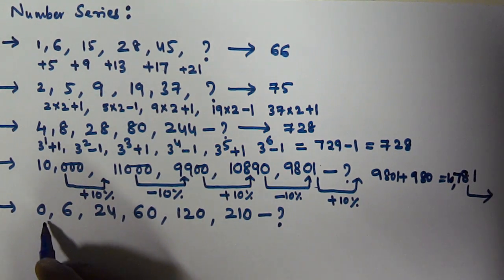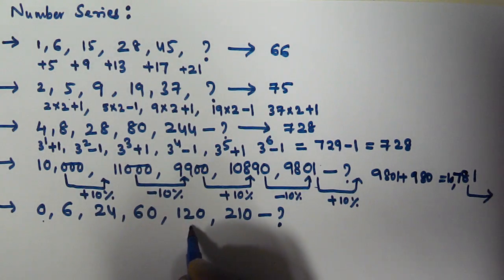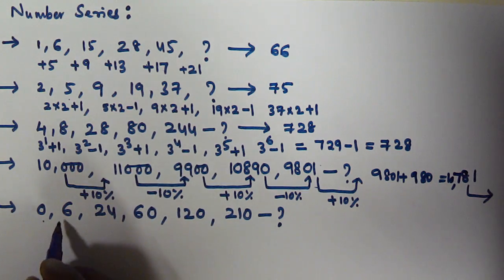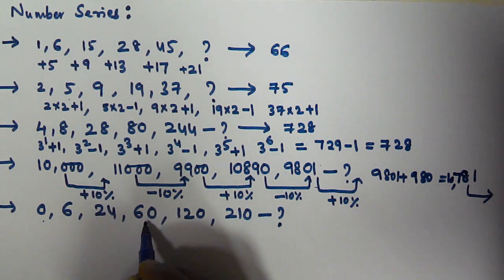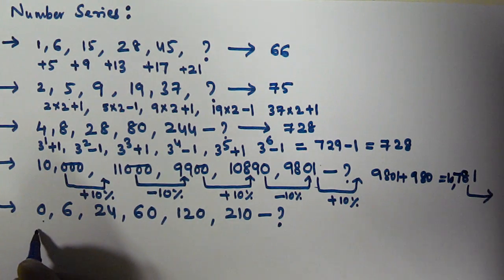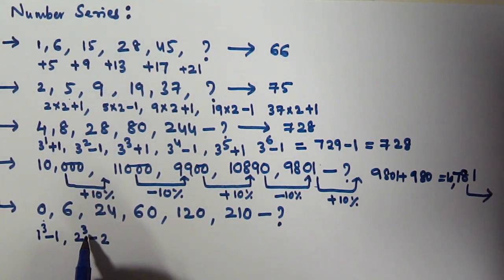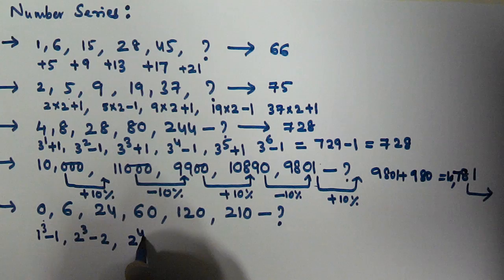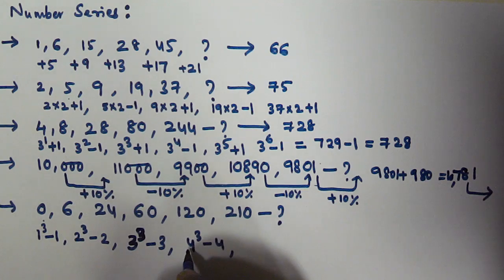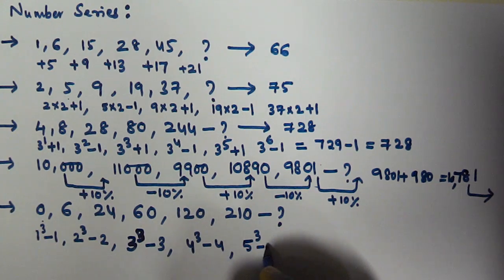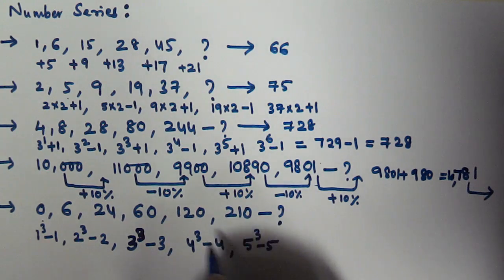For the fifth series, 0, 6, 24, 60, 120, 210, the pattern is n³ minus n. So 1³−1=0, 2³−2=6, 3³−3=24, 4³−4=60, 5³−5=120, 6³−6=210. The next term uses n=7.